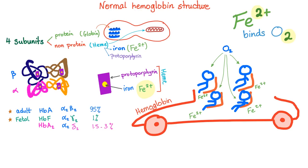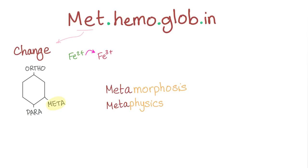Normal hemoglobin structure has protein and non-protein subunits. The non-protein is heme; the protein is globin. Heme consists of iron and protoporphyrin — specifically ferrous iron. Normal hemoglobin has two alpha chains and two beta chains, each with a heme group. Normal hemoglobin is like a car with four seats — the four seats are for four oxygen molecules.